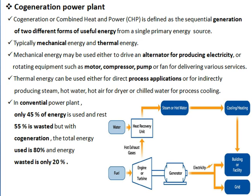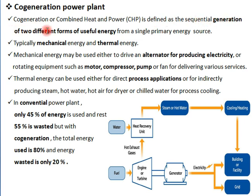Now we see the co-generation power plant. The co-generation power plant is nothing but the combined heat and power plant. It is defined as the sequential generation of two different forms of useful energy from a single primary energy source.